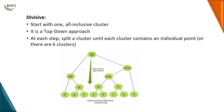The divisive method starts with one all-inclusive cluster — it is a top-down approach. At each step, a cluster is split until each cluster contains an individual point. You can see here I have A, B, C, D, E, F, G which are split up, and finally in the last row everything is split individually. This is about the hierarchical method.